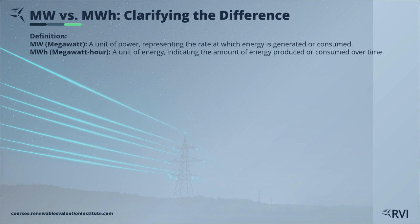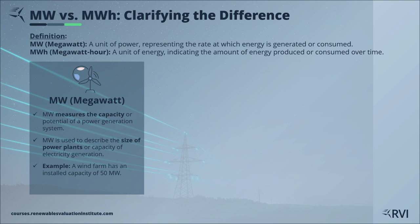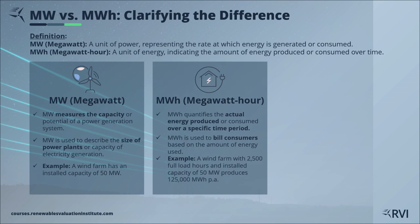Megawatt and megawatt hour, though closely related, serve different purposes in the world of energy and financial modeling. MW, or megawatt, is a unit of power. It measures the rate at which energy is generated or consumed. Think of it as the engine size of a power plant — it reflects the plant's capacity to produce electricity. A 1 megawatt power plant can generate 1 megawatt of electricity at any given moment.